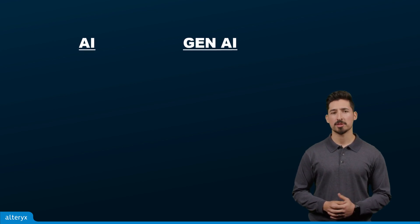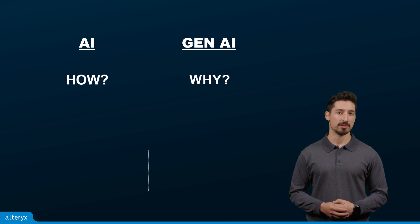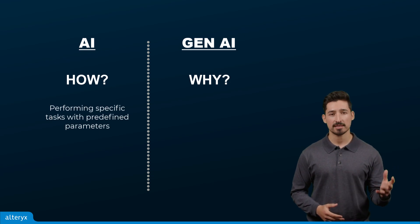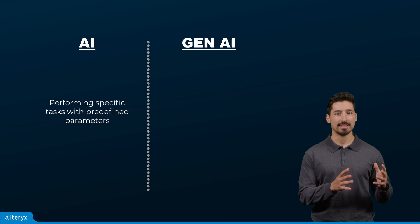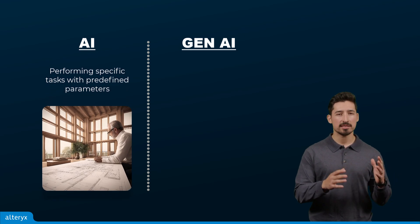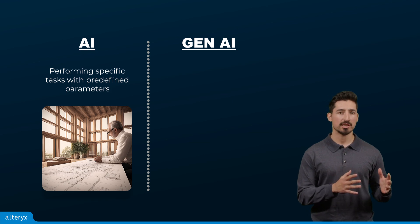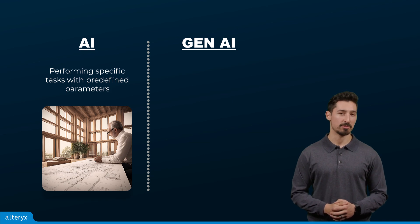The key difference between the technologies used in AI and Gen.AI lies in how and why they're used. Traditional AI specializes in performing specific tasks with predefined parameters. You could think of this AI as a seasoned architect, meticulously designing structures based on existing blueprints. It strategically processes data, makes calculated decisions, and then automates repetitive tasks with precision.